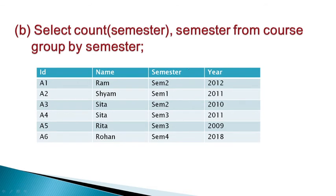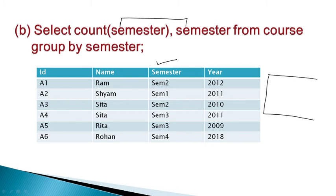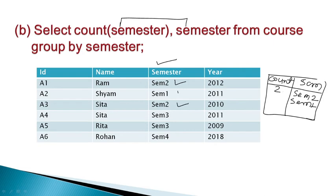Next, option B: SELECT COUNT(semester), semester FROM course GROUP BY semester. We count the semester column and group by semester. Two columns will appear: semester and count. For example, semester 2 has count 2, semester 1 has count 1, semester 4 has count 1, semester 3 has count 2. This query is also correct and satisfies the table.